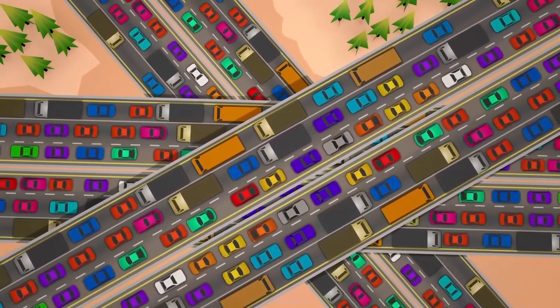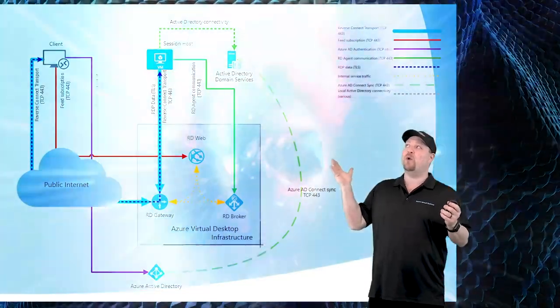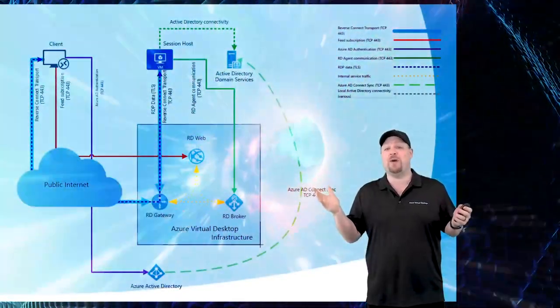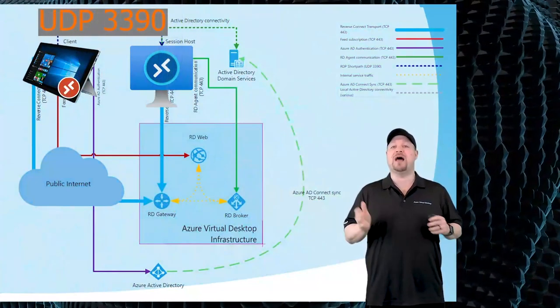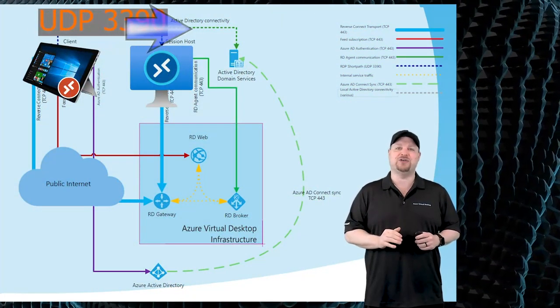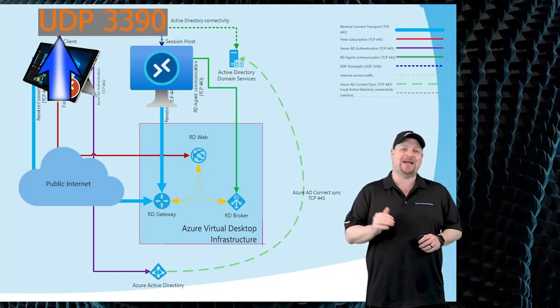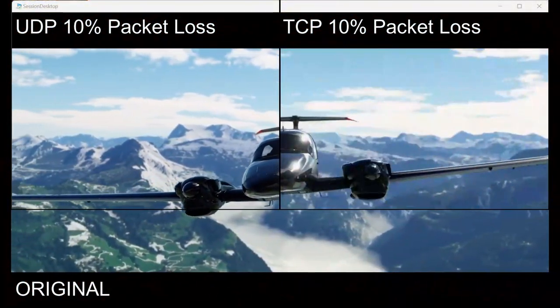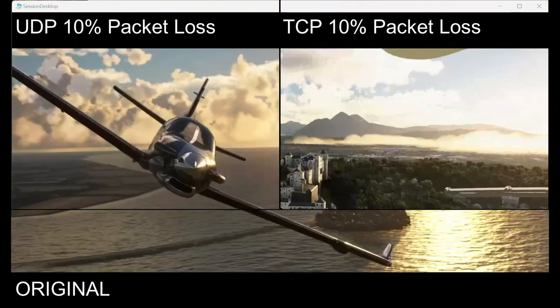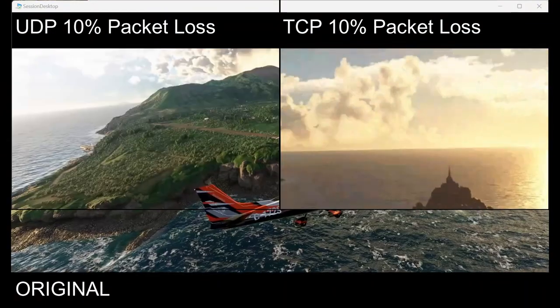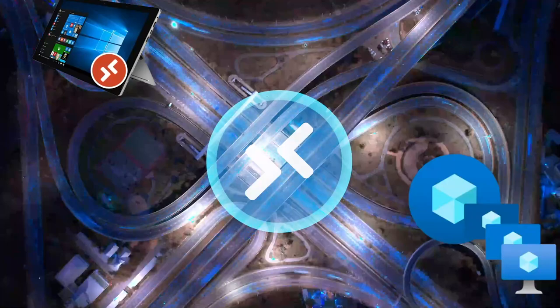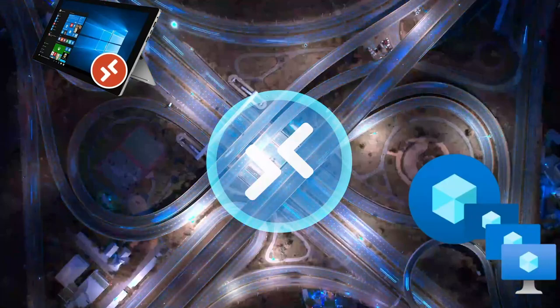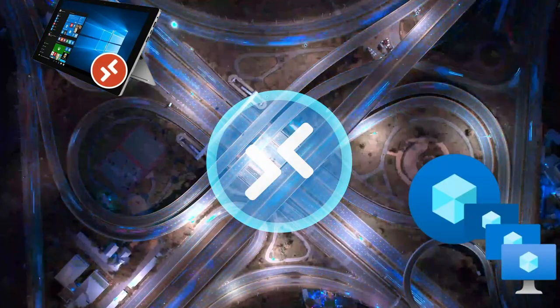There is no getting around the laws of physics, but what if we could just change the equation? RDP ShortPath, on the other hand, uses the UDP protocol on port 3390 and allows you to connect directly to your session hosts. This greatly reduces latency since UDP is a much more efficient protocol for this kind of traffic, but there's more to RDP ShortPath than just turning on UDP. Your user sessions will also use a more efficient connection between your clients and the session hosts by bypassing all of that unnecessary stuff.